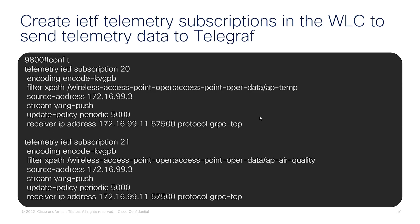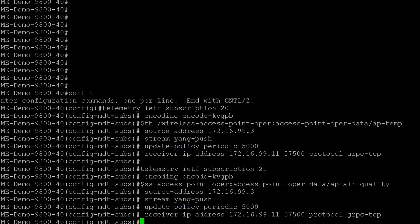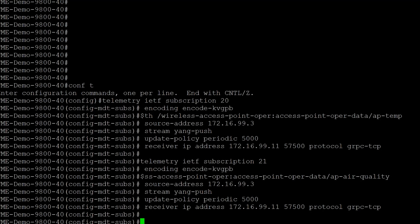Lastly, we enter the IP address of where the receiver is — that's where Telegraph is located — and then what port Telegraph is listening to, for example port 57500, and which protocol it's using, so gRPC TCP. Now we can head into the controller, paste the configuration, and it should be sending that data towards Telegraph.